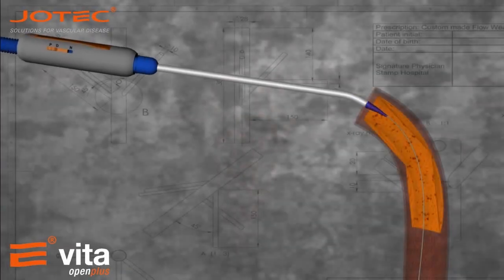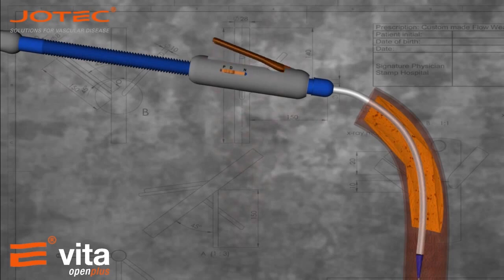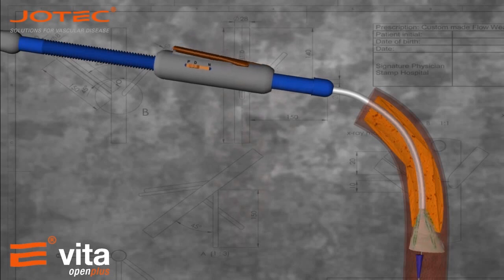Introduction of the Evita OpenPlus stent graft. Deployment of the stent graft and anchoring to the aorta with polypropylene 2-0 or 3-0 sutures.